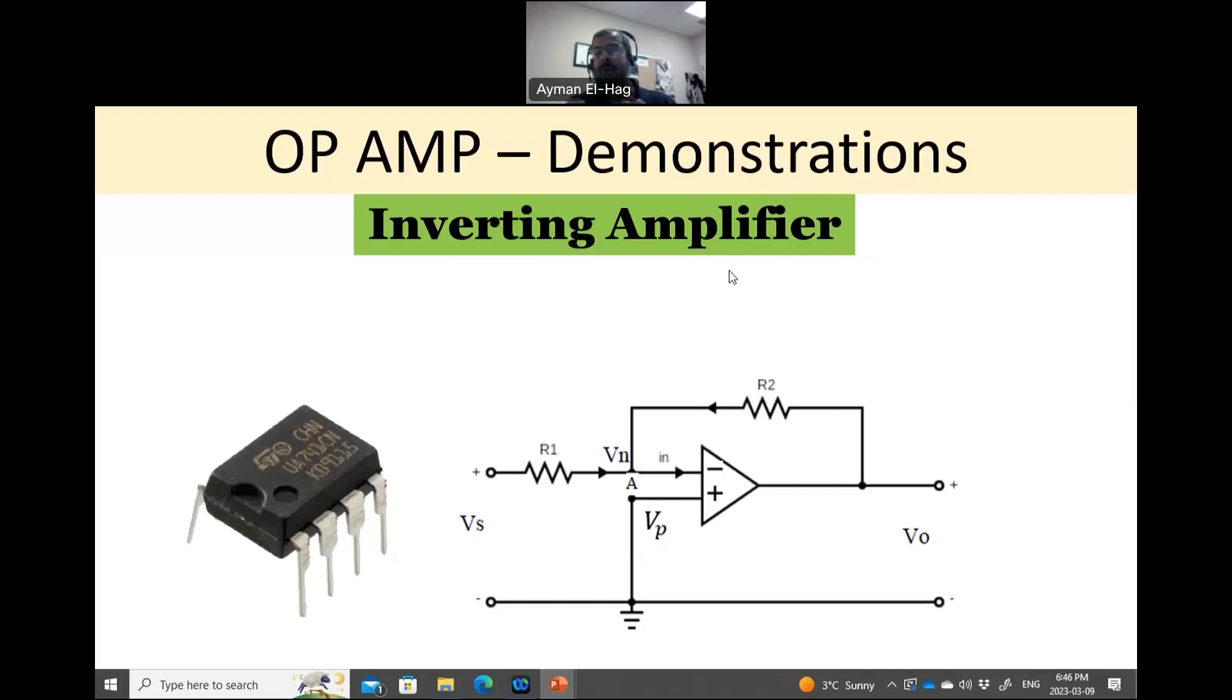So we'll start with the most common circuit in operational amplifier, which we call the inverting amplifier. And from its name, it is an amplifier. It means it amplifies the signal, and it is inverting, means that it changes the sign of the input. So if the input is negative, it will become positive. If it's positive, it will become negative.